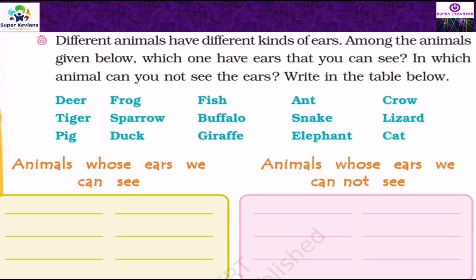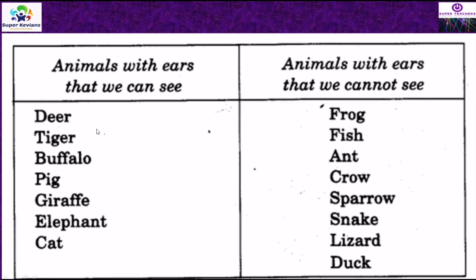Different animals have different kinds of ears. Among the animals given, which ones have ears that you can see, and in which animals you cannot see the ears? All animals have ears but in some we can see them and in some we cannot. You have to write the names of animals whose ears we can see, and those whose ears we cannot see. Animals with visible ears: deer, tiger, buffalo, pig, giraffe, elephant, cat — all these animals we can see their ears.